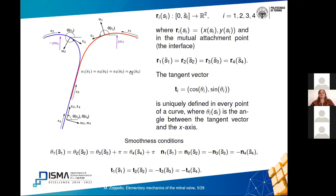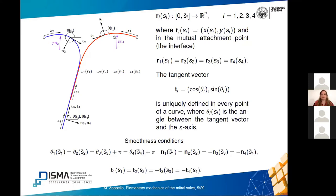Each curve is described by a function r_i as a function of arc length, and we call s̄_i the mutual attachment point of the four curves. At this attachment point the four curves satisfy a continuity condition, since the attachment point should have the same x and y coordinates in the lab frame. For each curve we can uniquely define a tangent vector as a function of an angle θ_i, which is the angle between the tangent vector and the horizontal x-axis, measured anti-clockwise.